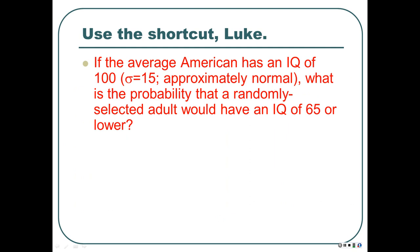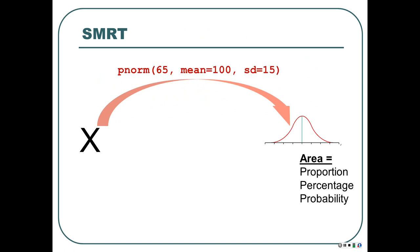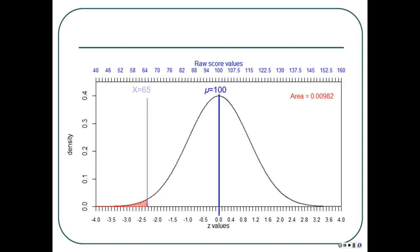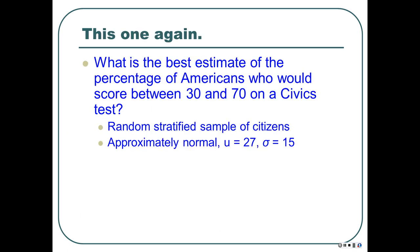For the IQ example in R: pnorm(65, mean=100, sd=15) — since we want the lower tail and that's the default, we leave it out. The result is 0.00982, so about 1%. That matches what we calculated with the table.